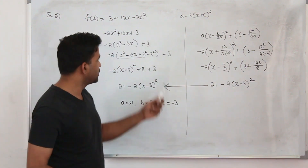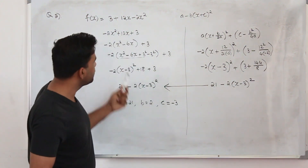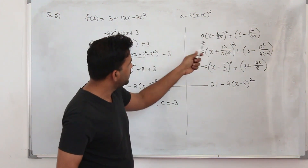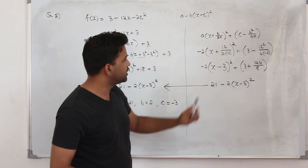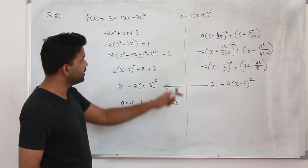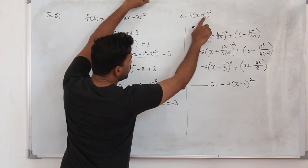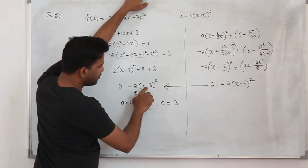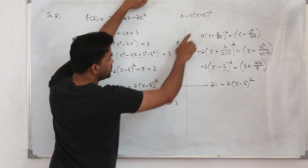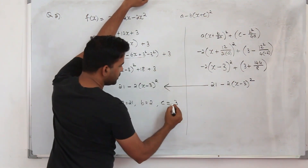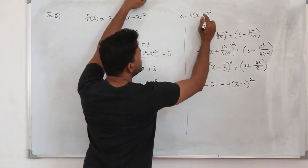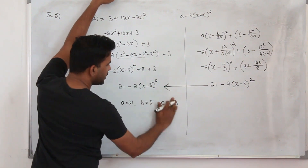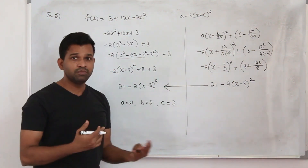You can use either method — the step-by-step completing the square or the textbook formula. Be very careful when comparing: don't write c as positive 3, that's wrong, because here you have x + (-3), so c = -3. If the form were x - c, then c would be positive 3. You need to be careful when comparing.